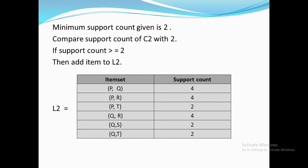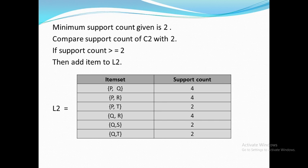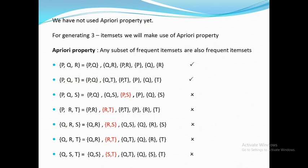Till now we have not used the Apriori property. The Apriori property states that any subset of a frequent item set is also a frequent item set. For generating 3-item-sets we will make use of the Apriori property. A 3-item-set means an item set that contains exactly 3 elements. For creating 3-item-sets we will use L2 join L2. For example, combining PQ and PR gives PQR; combining PQ and PT gives PQT. Similarly we get all 7 candidate pairs: PQR, PQT, PQS, PRT, QRS, QRT, and QST.